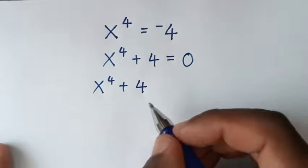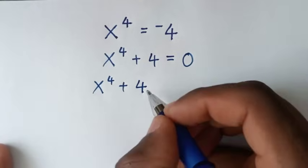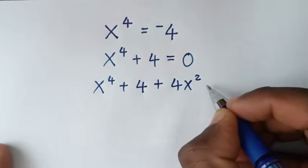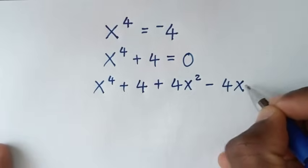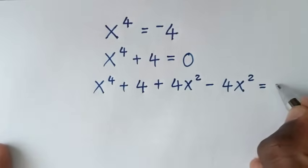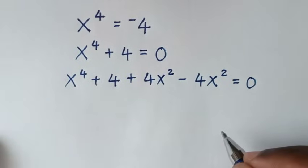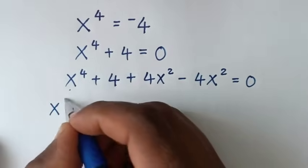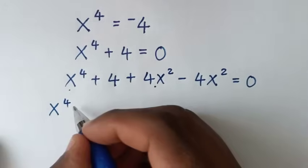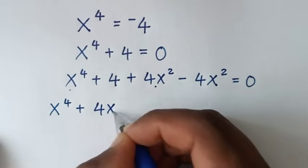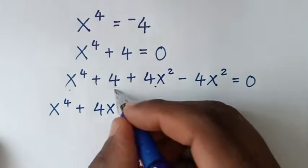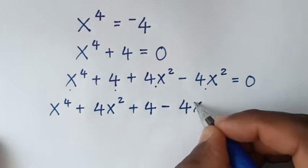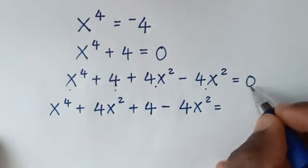Then here we'll make it in the form of a perfect square. So we'll add 4x² and minus 4x², which is equal to 0. Then in the next step, it will be x to the power of 4, then plus 4x², then plus 4, then minus 4x², is equal to 0.